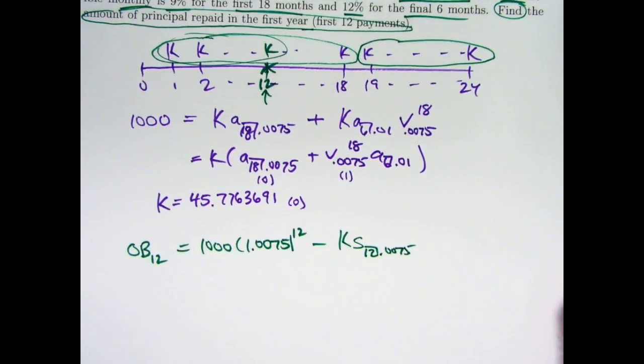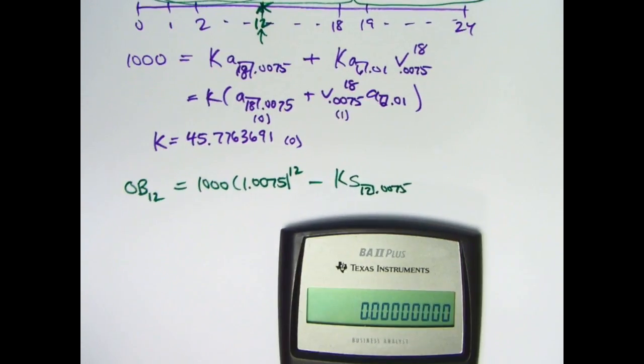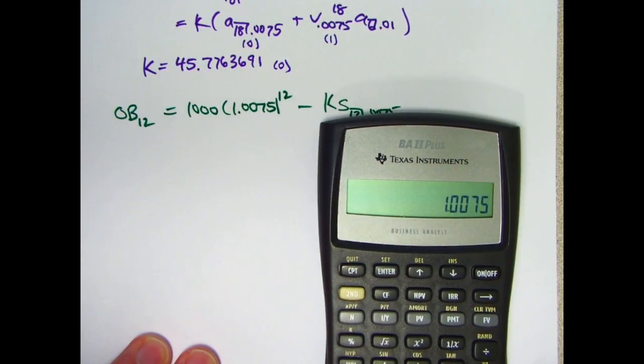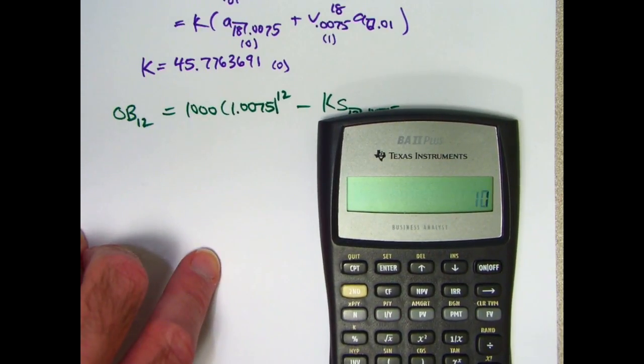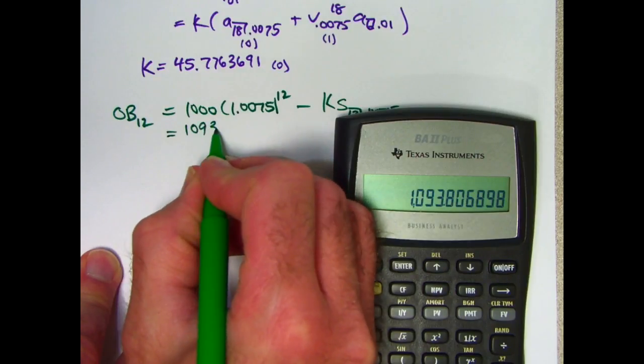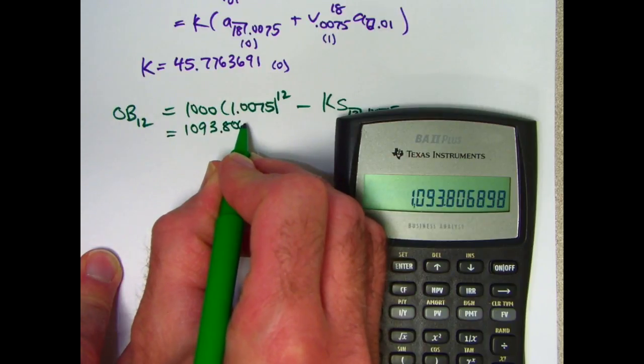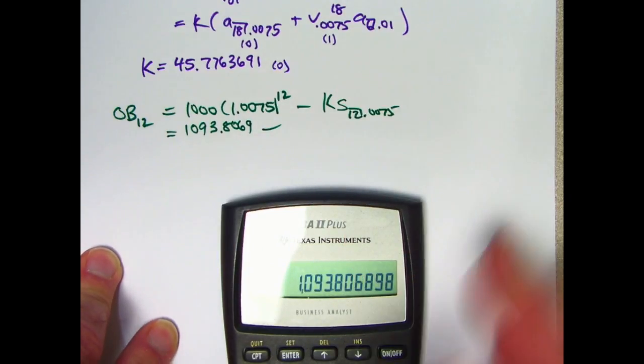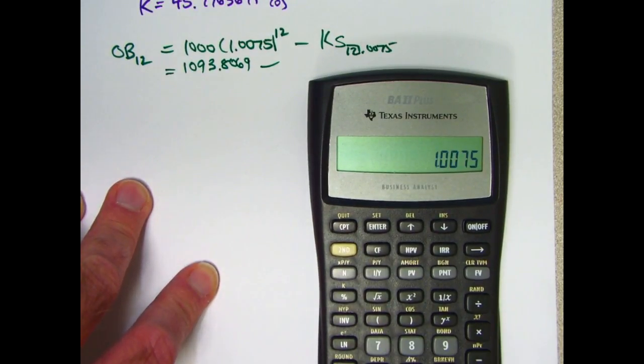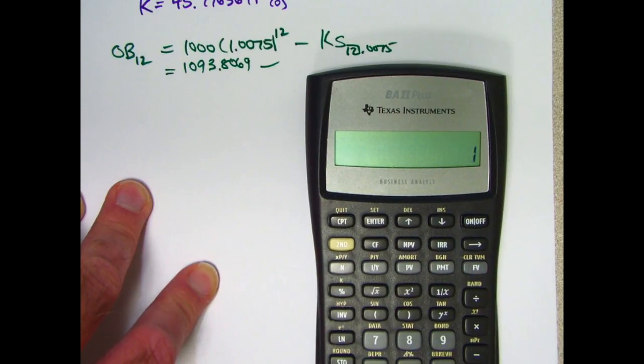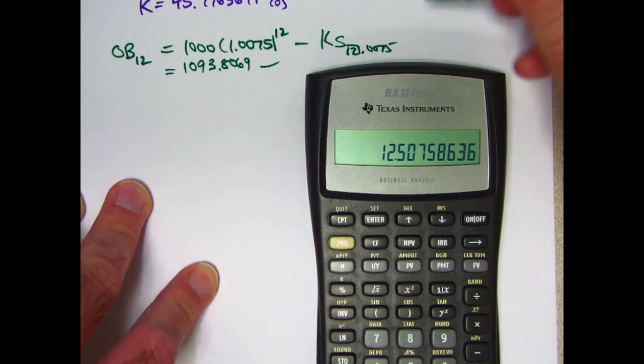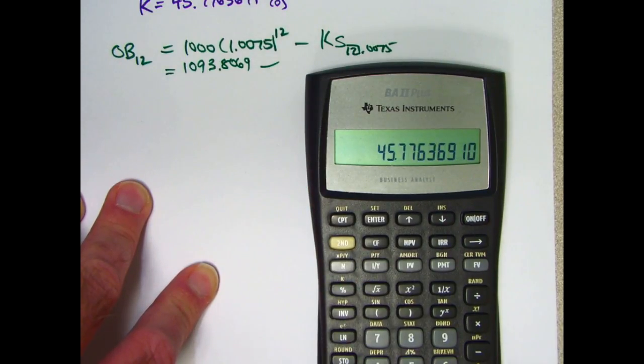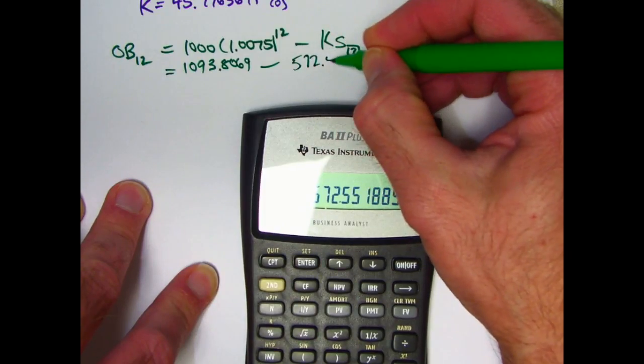So this should be the outstanding balance at time 12. Let's take 1.0075 to the 12th power times 1000. I'll go ahead and just write that down: 1,093.8069. I've got K stored in register 0, so find s-angle-12. Take 1.0075 to the 12th power, minus 1, divide by 0.0075. This value of s here is about 12.5076. Multiply that by K, which is stored in register 0, and we get about 572.5519.